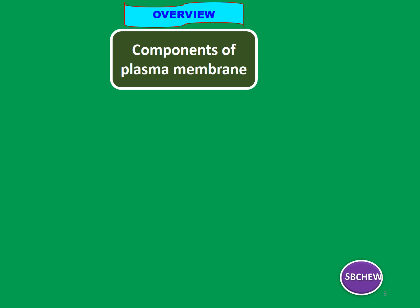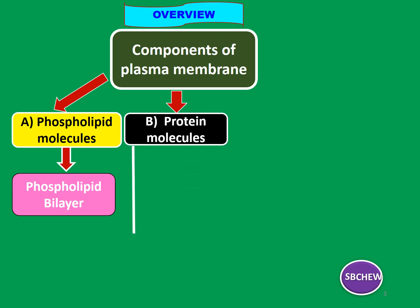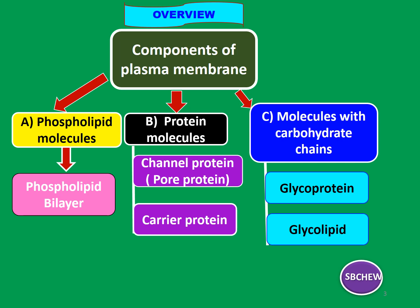Here is an overview of the main components of the plasma membrane. The plasma membrane consists mainly of phospholipid molecules which form the phospholipid bilayer. Secondly, we have the protein molecules, for example the channel protein and the carrier protein. Thirdly, there are molecules that have carbohydrate chains sticking out from the plasma membrane — examples are glycoprotein, which is protein plus the carbohydrate chain, and glycolipid, which are lipids with carbohydrate chains. Lastly, there is cholesterol, which is an important component of the plasma membrane. You can copy this schematic diagram into your exercise book if you find it useful.